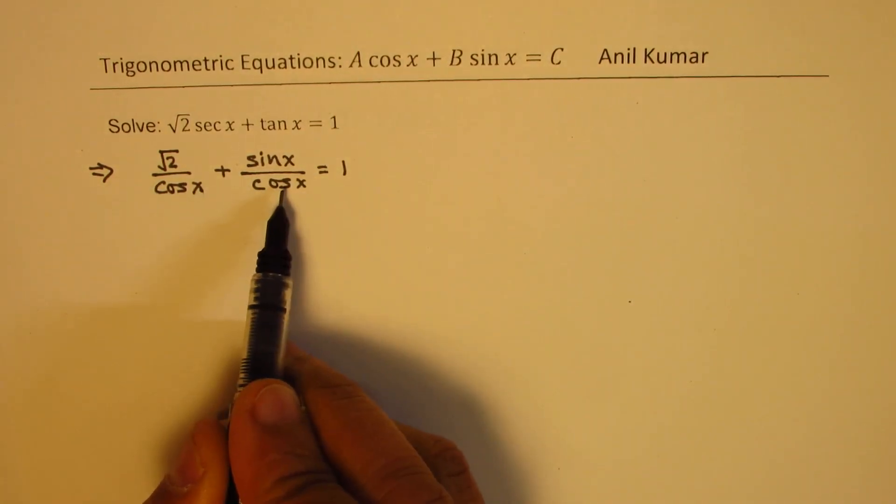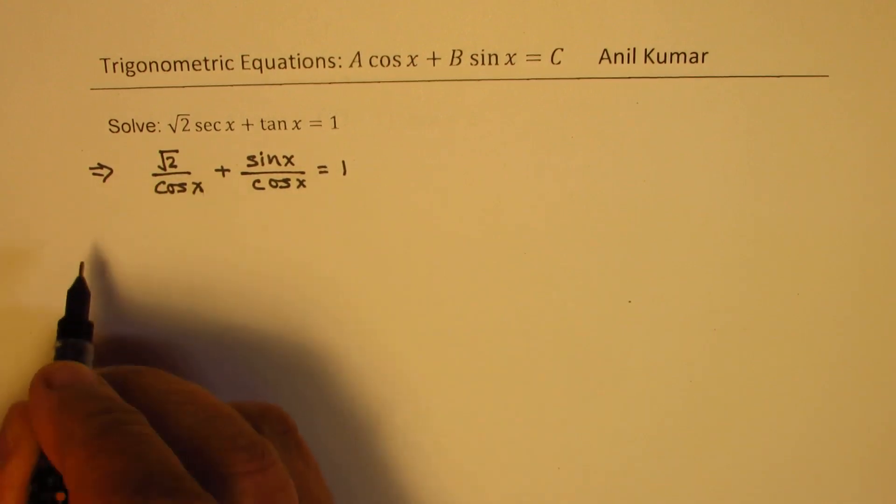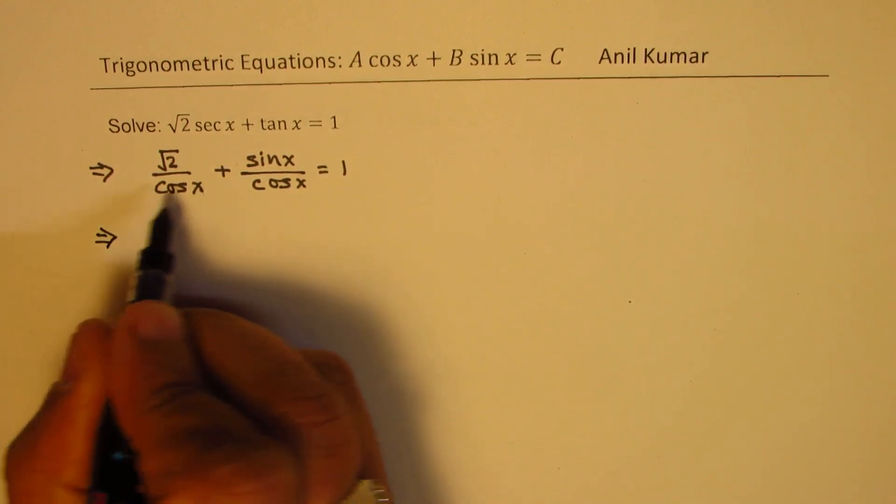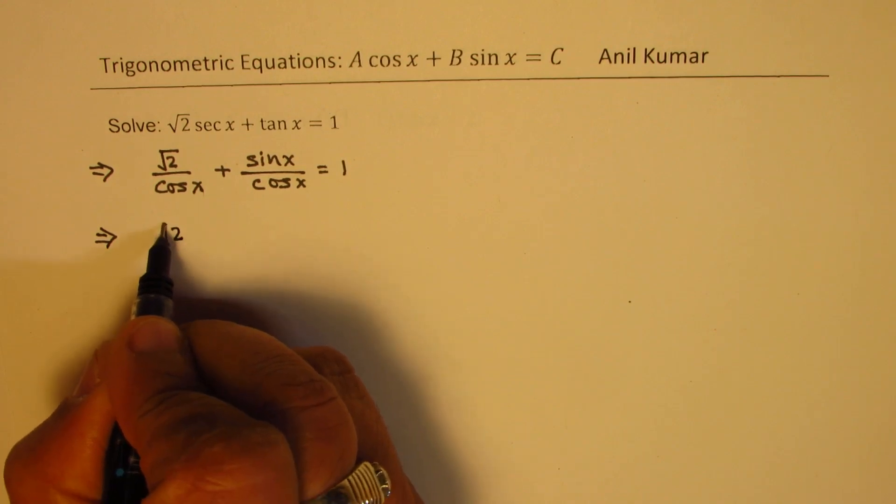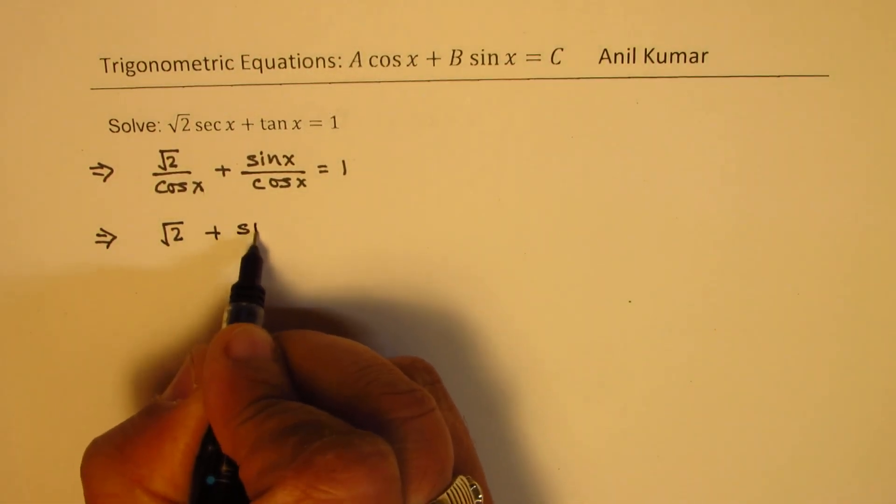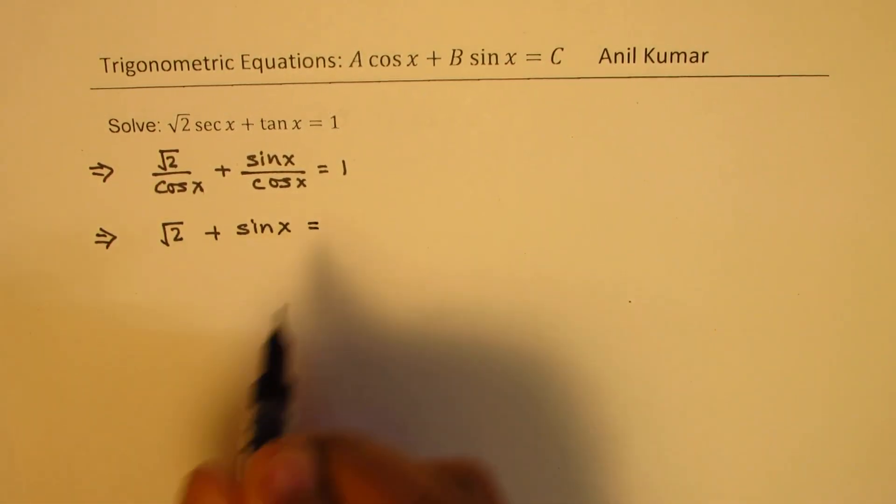Now cos x is a common denominator, we could multiply each term with cos x, so we get square root of 2 plus sin x equals to cos x.